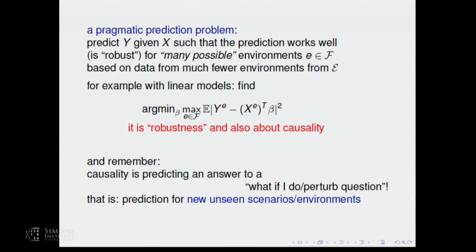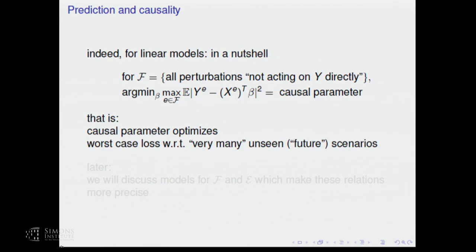This connection can be made rigorous. You can look at a certain space script F — models for perturbations and environments. If script F is all perturbations not acting on Y directly, then the solution of this worst-case risk optimization problem is the so-called causal solution. This requires careful definition, which I'll come to.